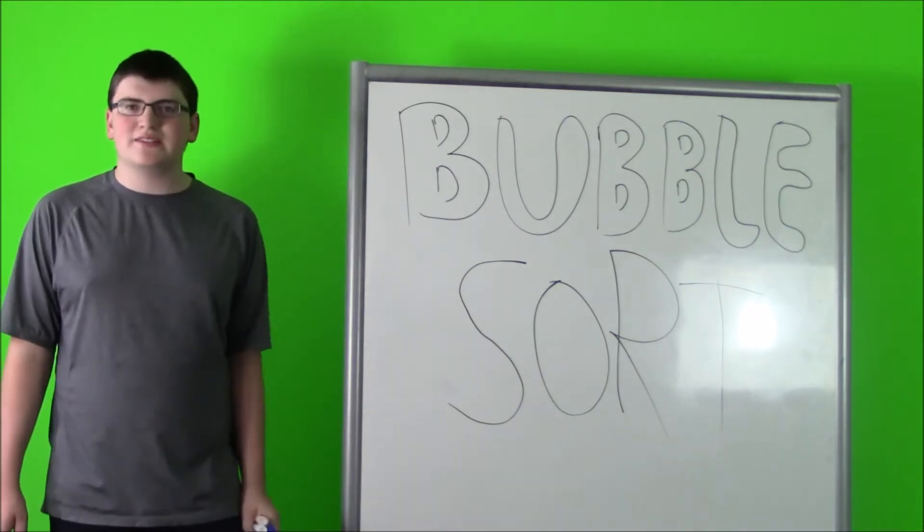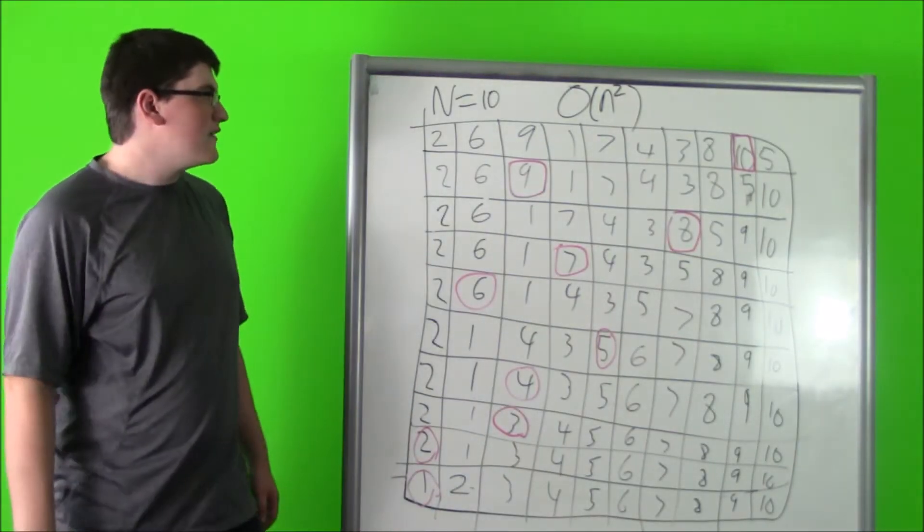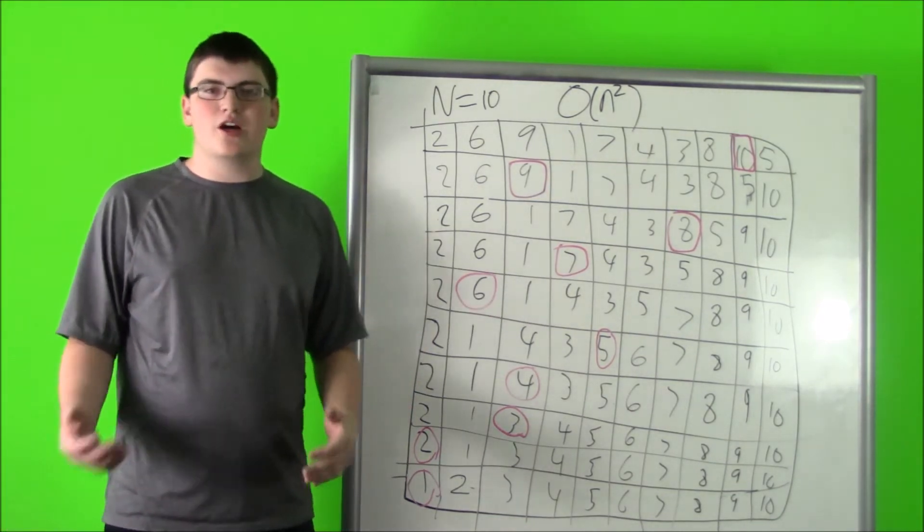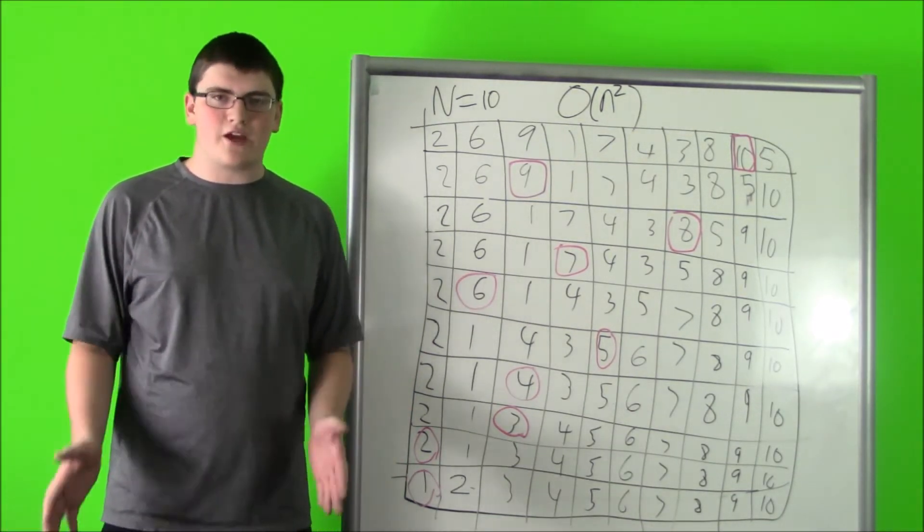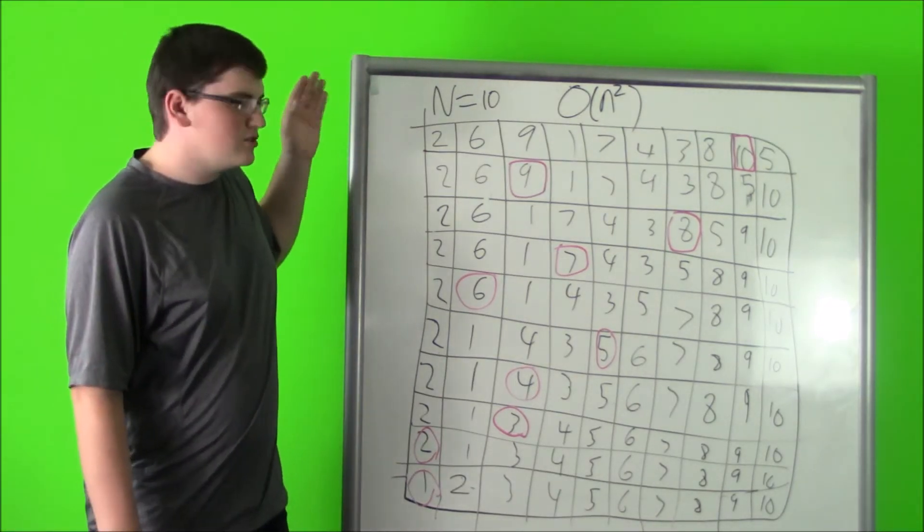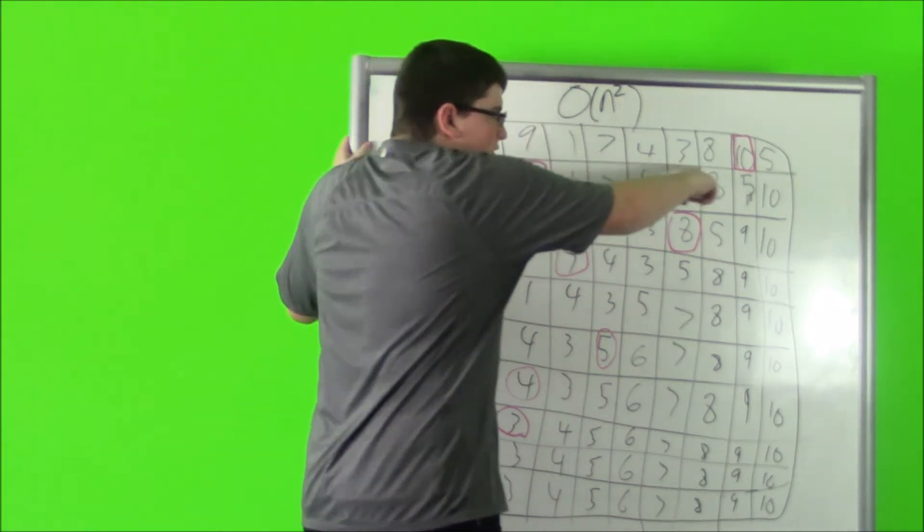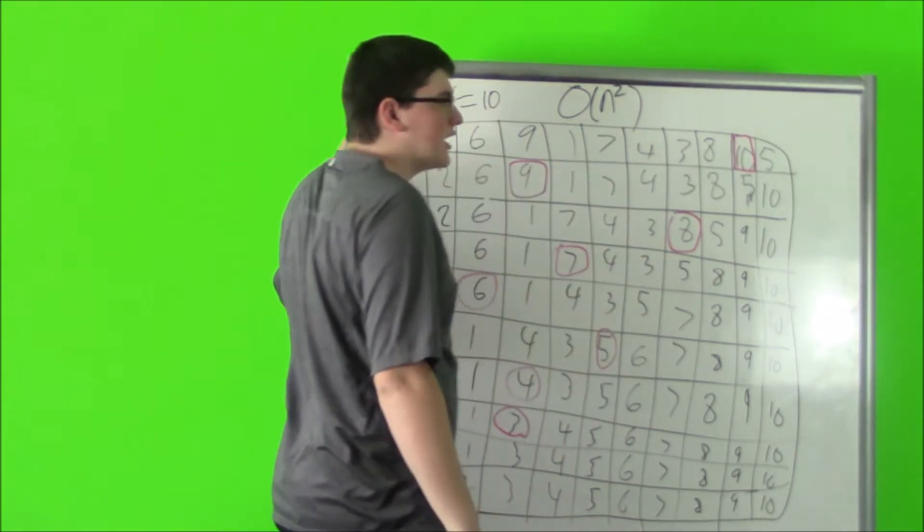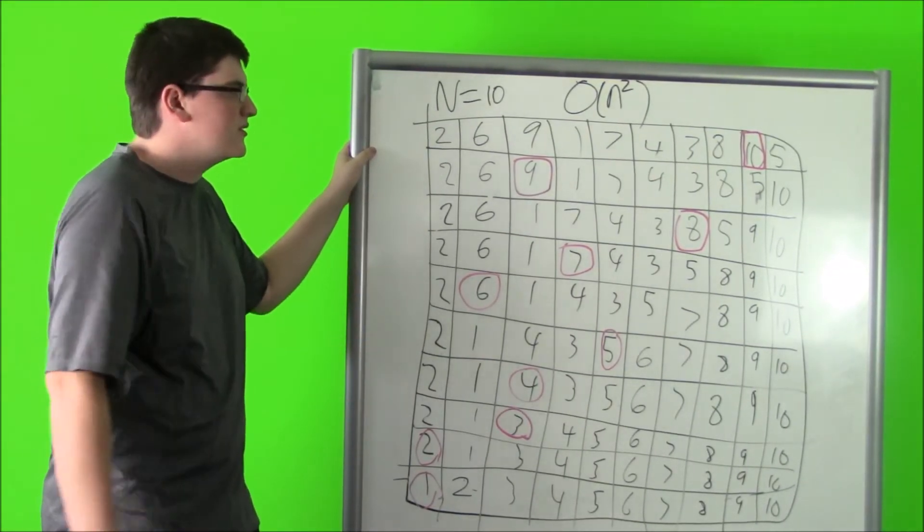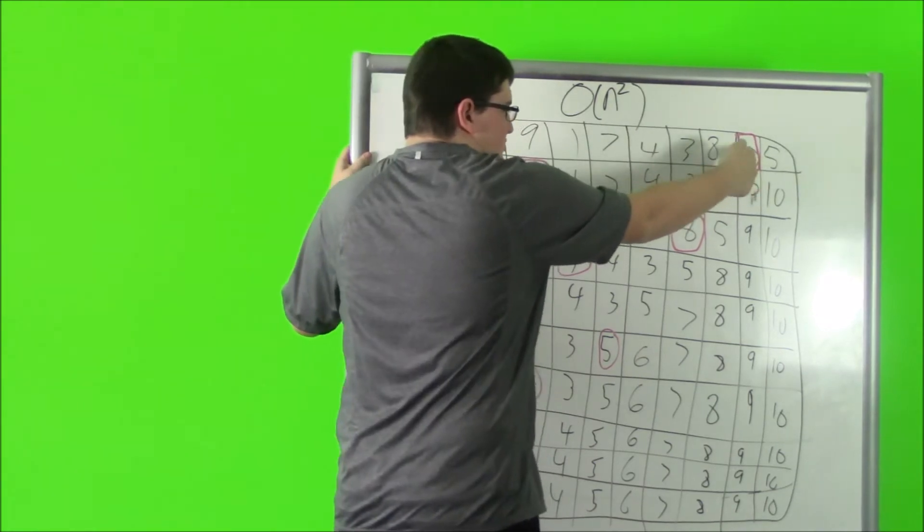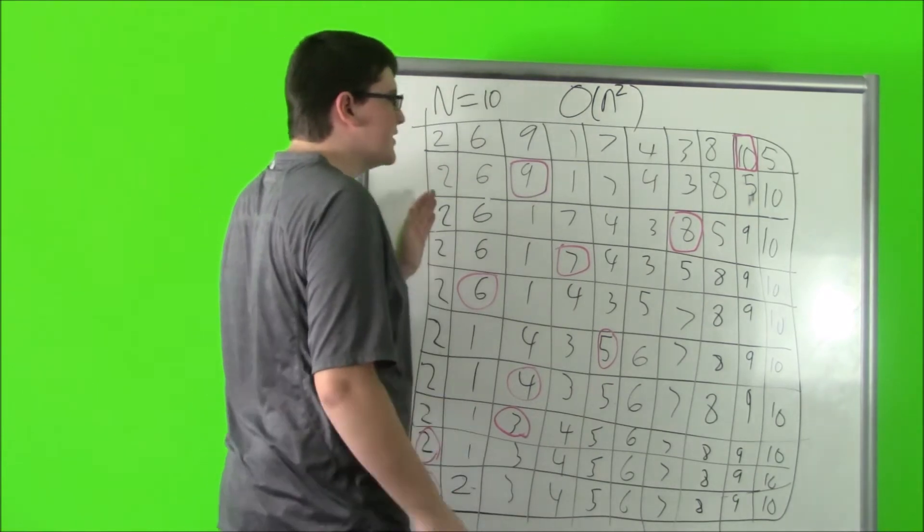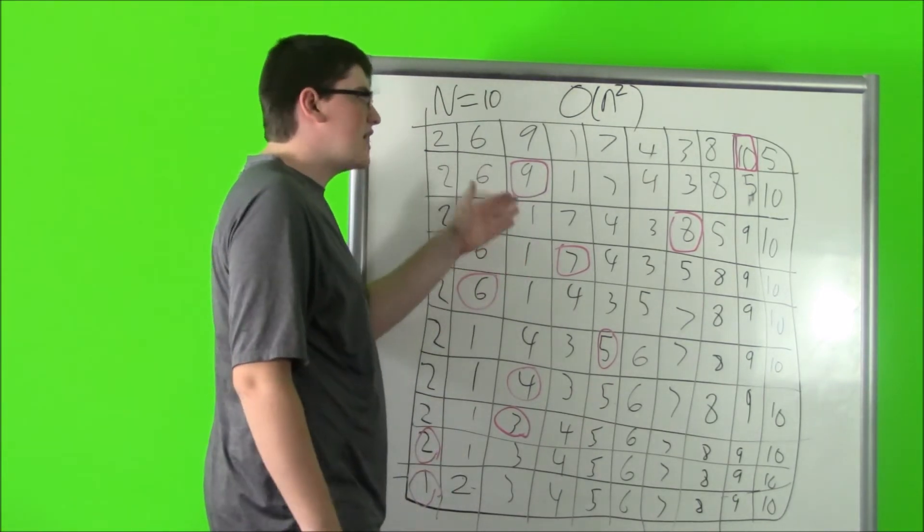I'll show you how it works right now. In bubble sort, the bigger numbers bubble to the end of the array and it keeps doing this until everything is sorted. It starts at the original array looking for the largest number, going through and comparing each element. That takes N times, N being the amount in the array, which is 10 for us. It finds 10, moves it to the end, then goes through again looking for the next largest number, which is 9.